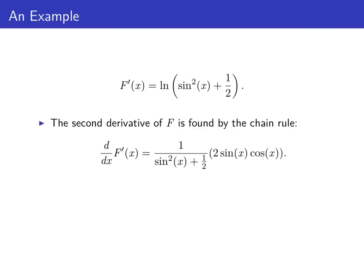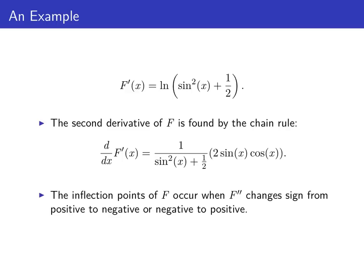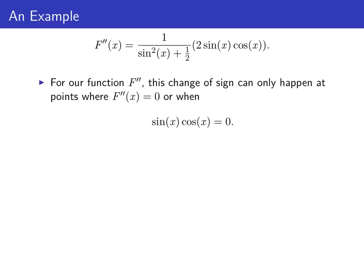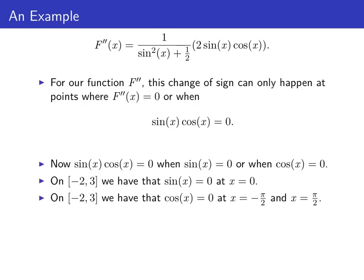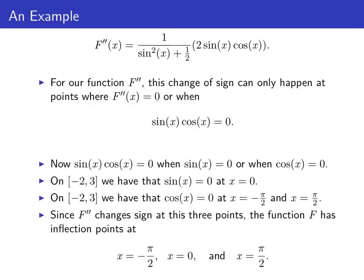We find the second derivative using the chain rule. Taking the derivative of the log gives one over (sin²x + 1/2), times the derivative of sin²x + 1/2, which is 2 sin x cos x. Inflection points occur where F'' changes sign, which happens where F'' equals zero — that is, where sin x cos x equals zero. Sine x is zero at x = 0, and cosine x is zero at x = −π/2 and x = π/2 on [−2, 3]. Since F'' changes sign at all three points, the inflection points are at x = −π/2, x = 0, and x = π/2.